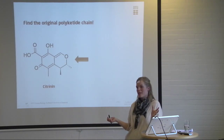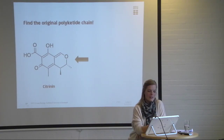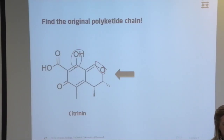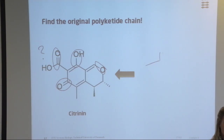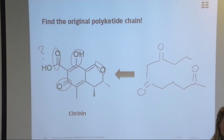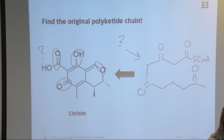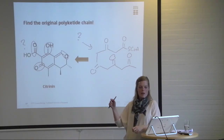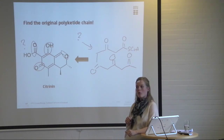You can do this for every polyketide you see. Again, recognize the oxygens: there's one here, one here, then every other — one here. Start drawing the chain, every other carbon bearing an oxygen. There's a methyl group sticking out here. There would have been a carbonyl group here at some point, because it has to be on every other carbon. Then acetyl-coenzyme A at the end. The carbonyl here — so every other in the beta pattern. You recognize the oxygens and try to draw the original chain of the polyketide used.